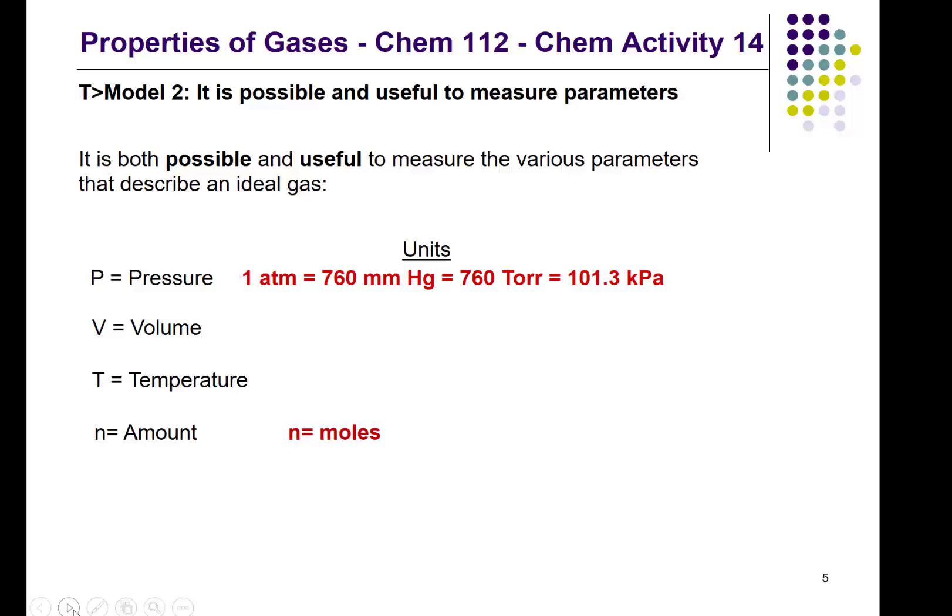So I'm starting off with some more conventional units, but later we'll be also including the bar. So for instance, we say that one atmosphere is equivalent to 760 millimeters of mercury, 760 torr, and 101.3 kilopascals.